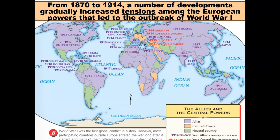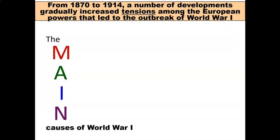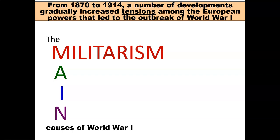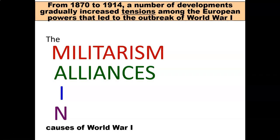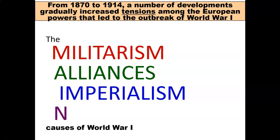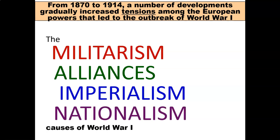From the year 1870 all the way to 1914, a number of developments gradually increased tensions among the European powers that led to the outbreak of World War One. For this lesson, we are going to focus on four main causes of World War One: the first cause is militarism, the second is alliances, the third is imperialism, and the last is nationalism.